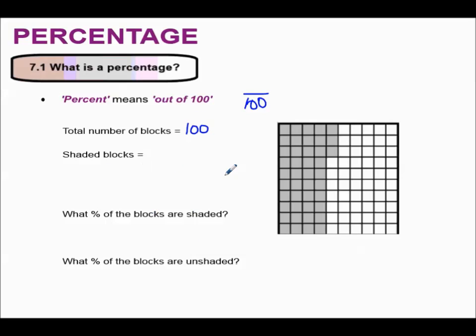How many shaded blocks are there? 4 rows of 10 are 40 plus 3, so I have 43 shaded blocks.